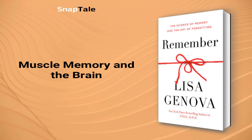Muscle Memory and the Brain: muscle memory is a crucial kind of memory that is formed through repeated practice, residing in the motor cortex rather than the hippocampus. In the absence of long-term memory due to the surgical removal of his hippocampus, Henry Mollason demonstrated the development of new physical skills through muscle memory. As the motor cortex forms stable neural pathways with practice, muscle memory does not rely on the hippocampus and enables us to retrieve physical skills without conscious thought.